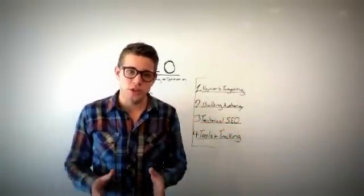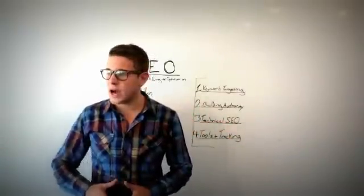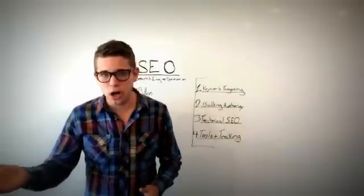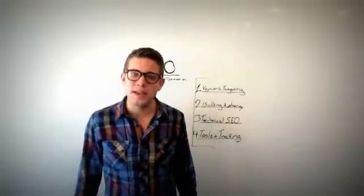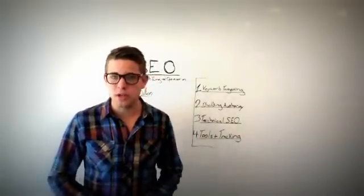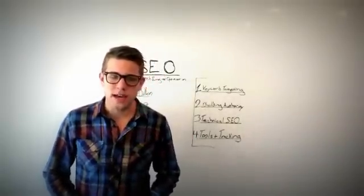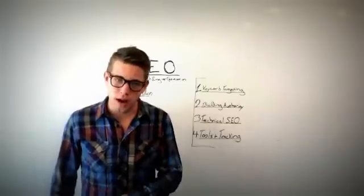So for example, if you have a donut shop and you want to find out if more people are searching for chocolate donuts or sprinkled donuts, you can do that because Google makes that kind of data publicly available. You can find all of that data at adwords.google.com.